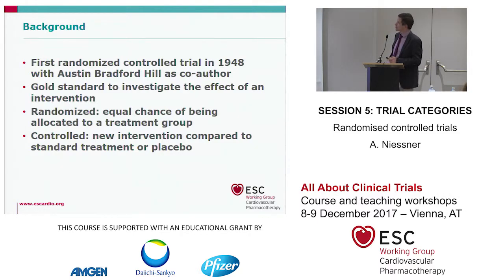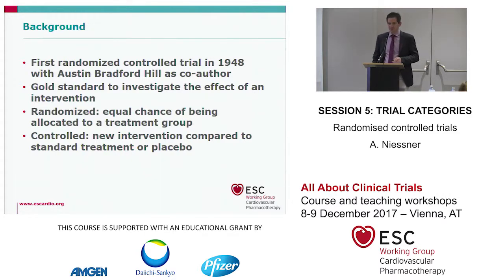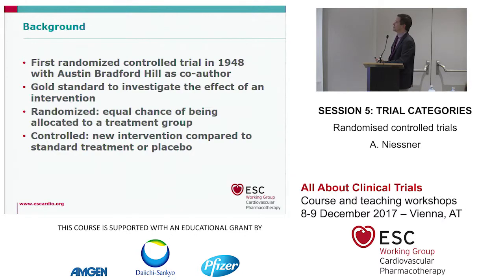The first randomized control trial was performed in 1948 by Austin Bradford Hill, a very famous statistician. It was about streptomycin.